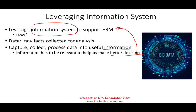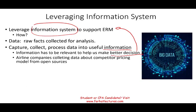For example, airline companies could collect data about competitor pricing models from open sources — going on travel websites to see how many seats and what prices competitors are offering, so they can set competitive prices. Same thing with hotels: they can go on hotels.com or travelocity.com and find out what other hotels in the area are charging, take that data, analyze it, and make a better decision. That is leveraging your information system.